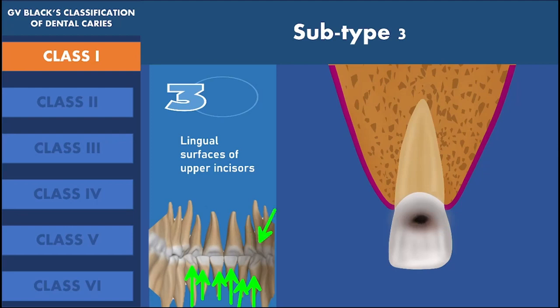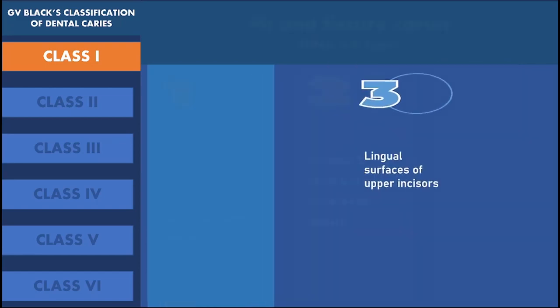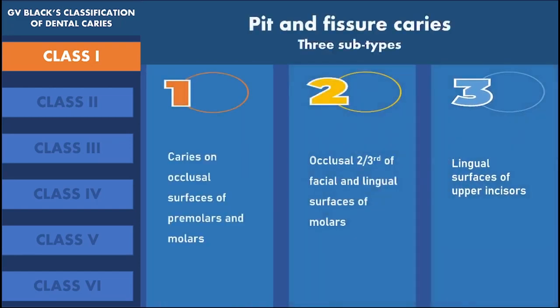In short, class 1 dental caries, which includes all the pit and fissure caries, is of 3 subtypes. Caries which occur on the occlusal surfaces of premolars and molars are subtype 1. Caries which occurs on the occlusal two-thirds of the facial and lingual surface of molars is subtype 2. And the caries which occurs on the lingual surfaces of upper incisors is subtype 3.